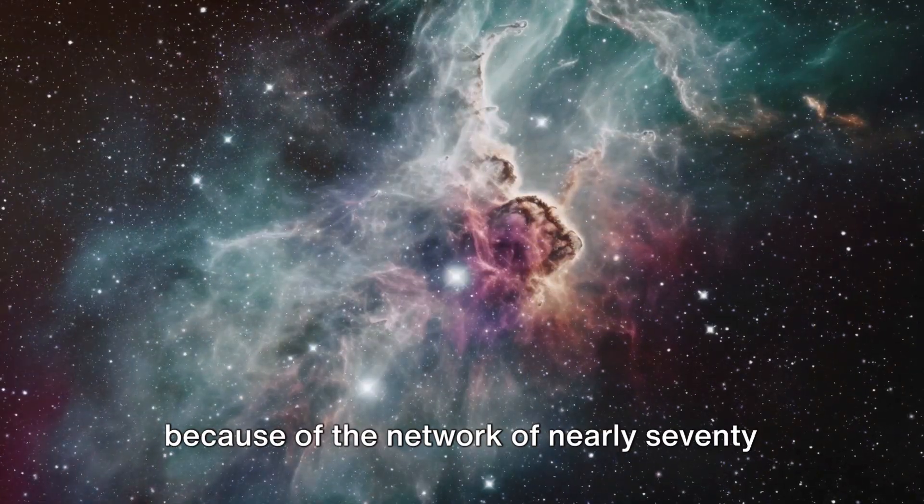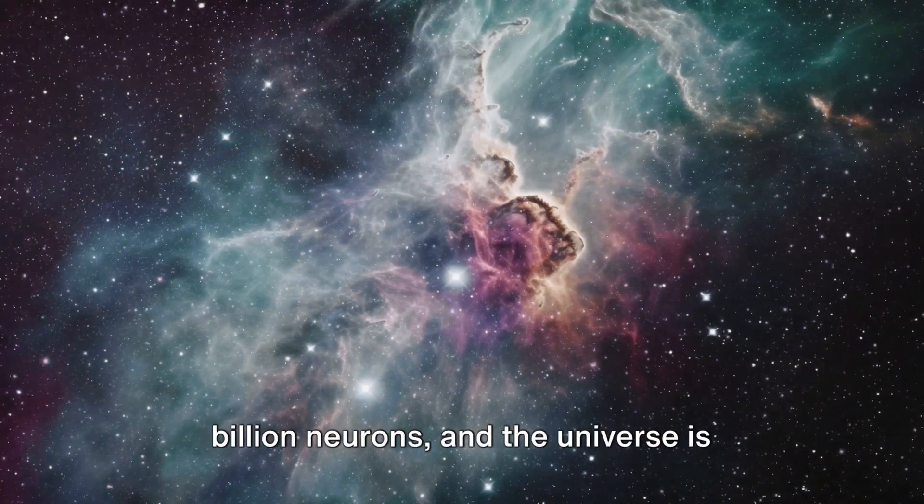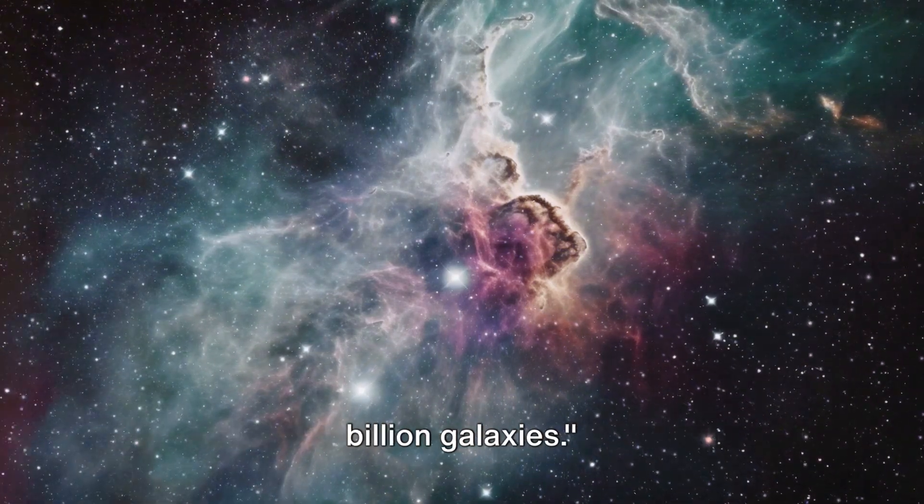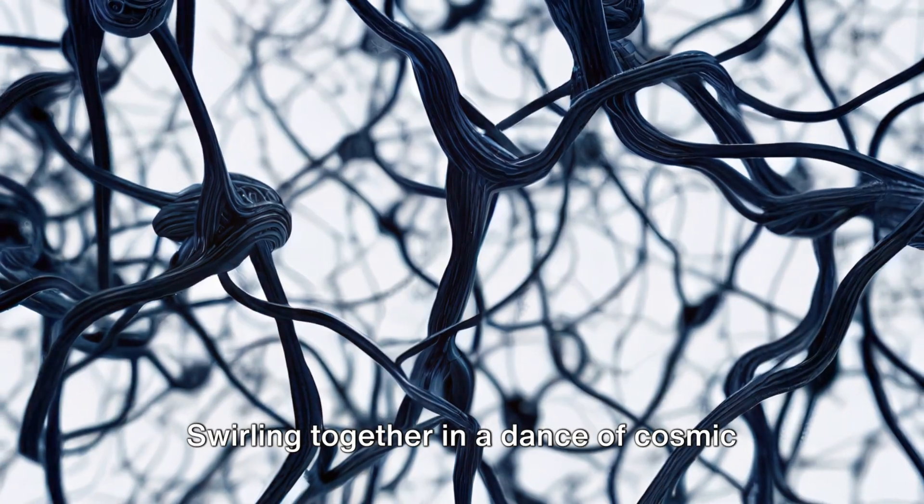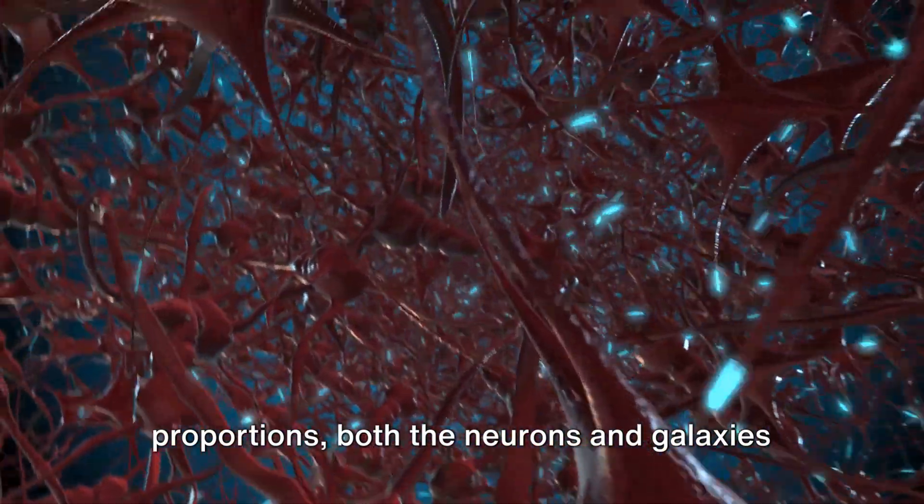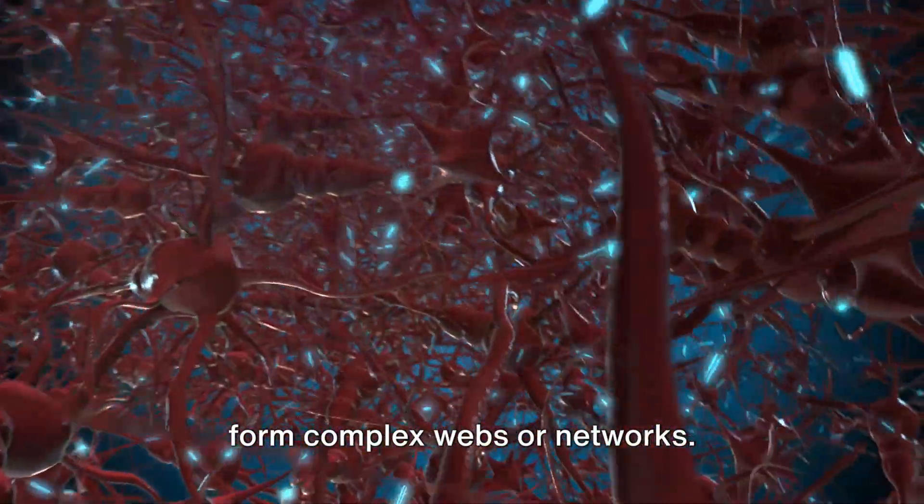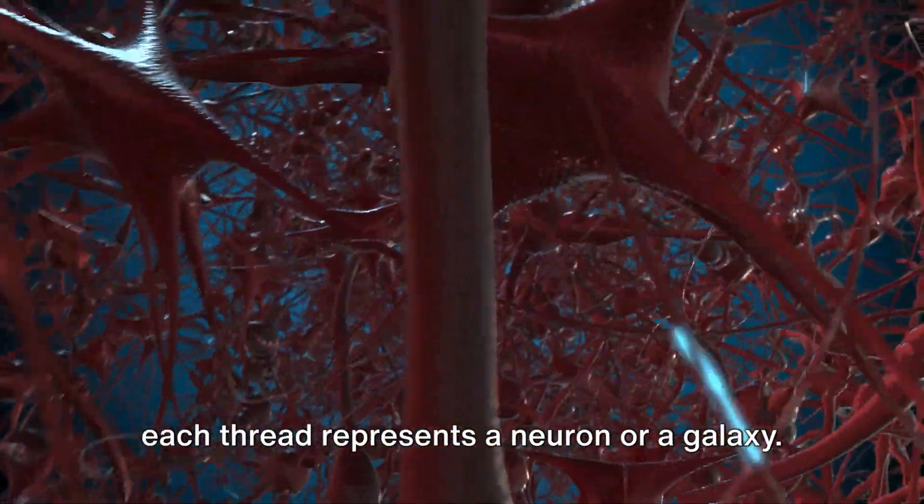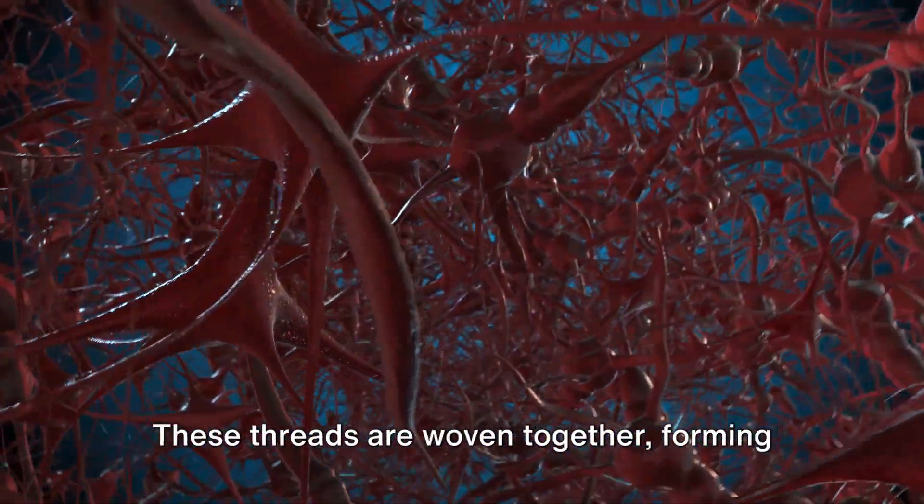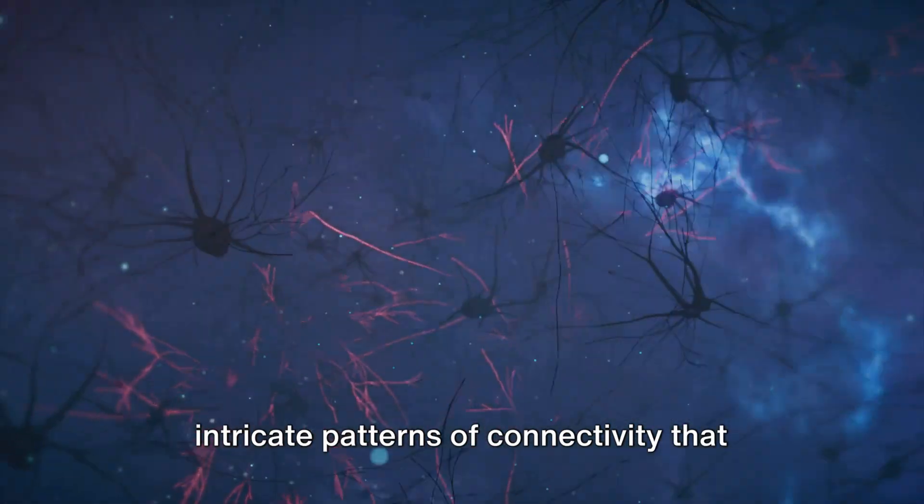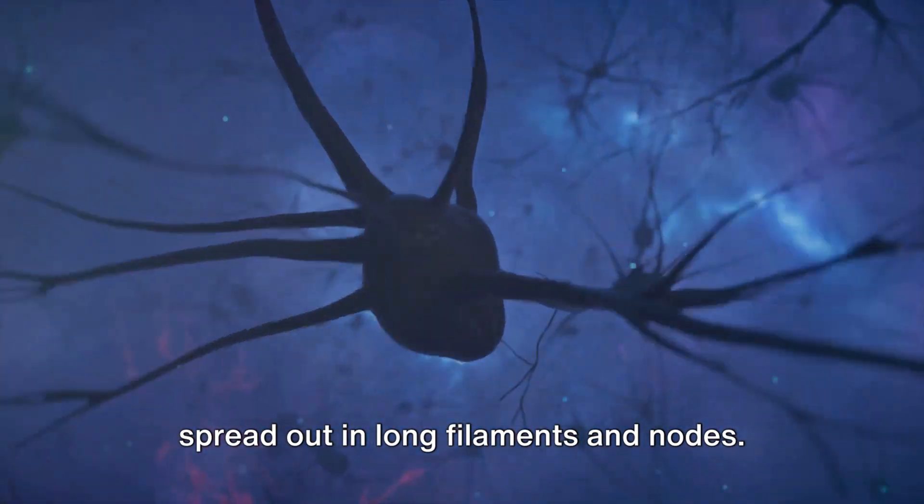Consider this: the human brain works because of the network of nearly 70 billion neurons and the universe is thought to have at least 100 billion galaxies. Swirling together in a dance of cosmic proportions, both the neurons and galaxies form complex webs or networks. Picture this as a vast tapestry, where each thread represents a neuron or a galaxy. These threads are woven together, forming intricate patterns of connectivity that spread out in long filaments and nodes.